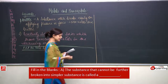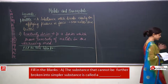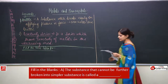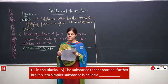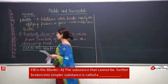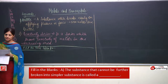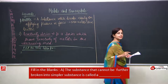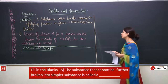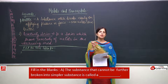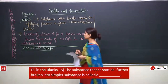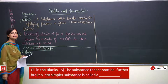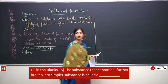First one: a substance that cannot be further broken into a simpler substance is called — reading it once again — a substance that cannot be further broken into a simpler substance. That means this is the smallest one; we cannot break it further. We have read that atom is that simpler unit.